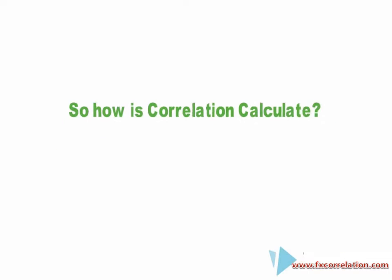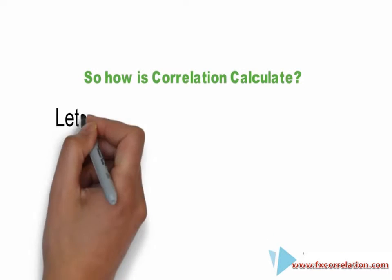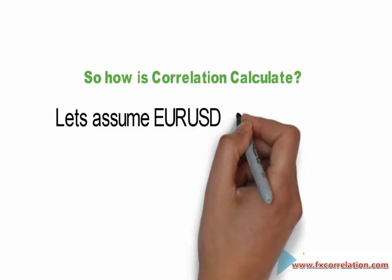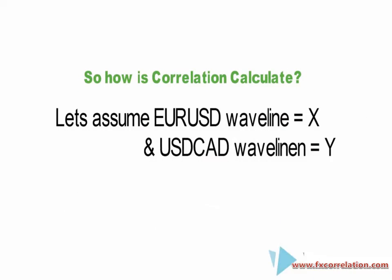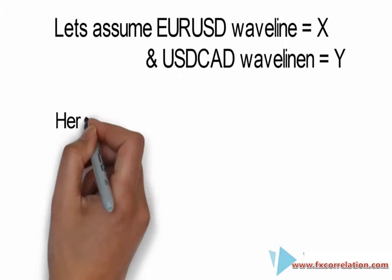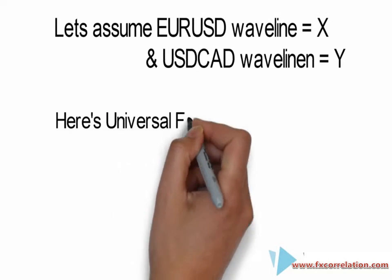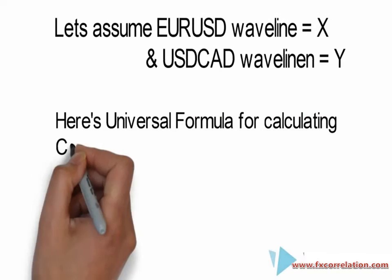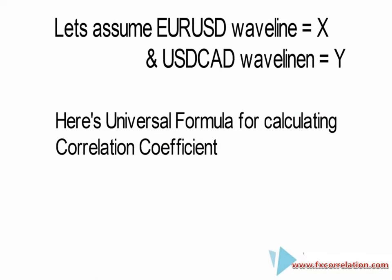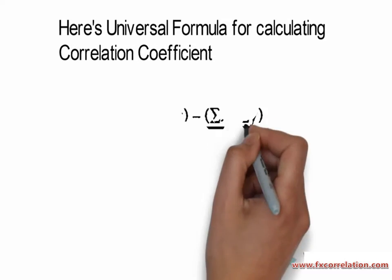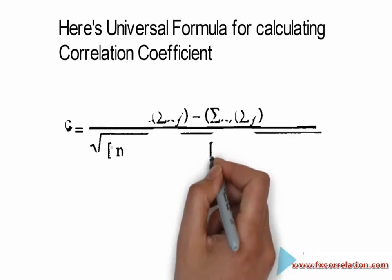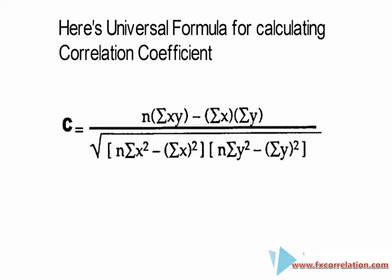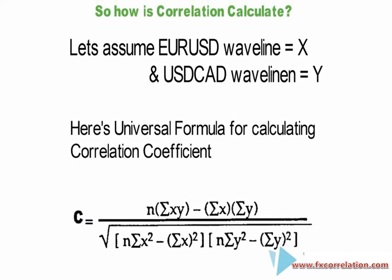So how is the correlation coefficient calculated? Let's assume the EURUSD wave line as X and the USDCAD wave line as Y. Here is the initial formula for calculating the correlation coefficient, where N represents the number of currency pairs.